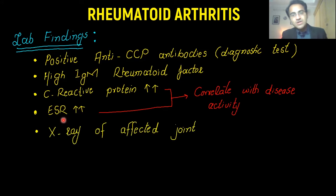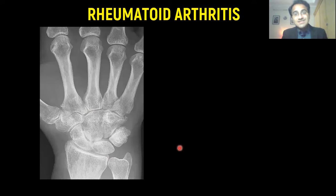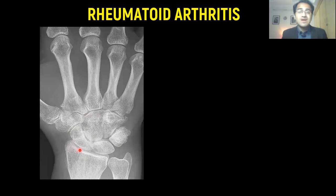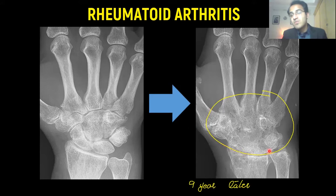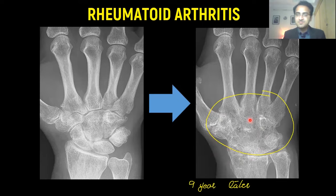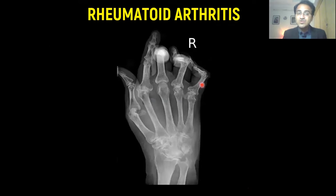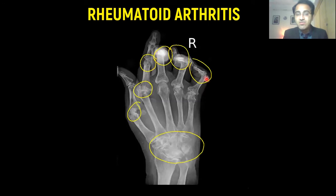An X-ray of the affected joint can also be done. This is an X-ray of a lady later diagnosed with rheumatoid arthritis — on the left is a normal X-ray of the hand with normal carpal bones. Nine years later, another X-ray showed the destruction of carpal bones and joints that occurred within those nine years. This other X-ray also shows destruction of all the joints — look at the joint destruction and deformation.